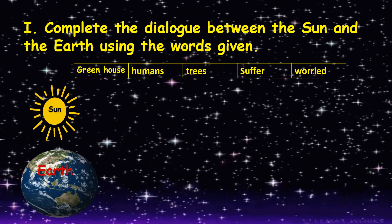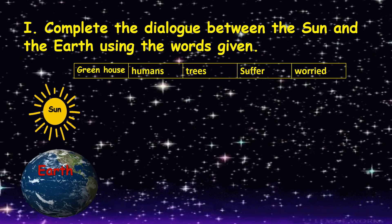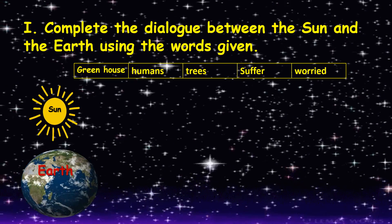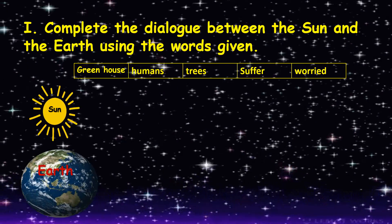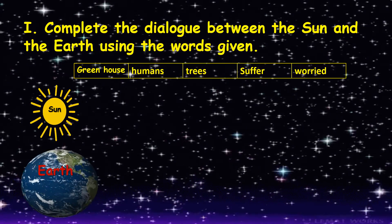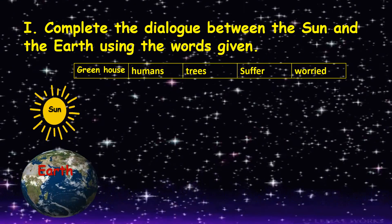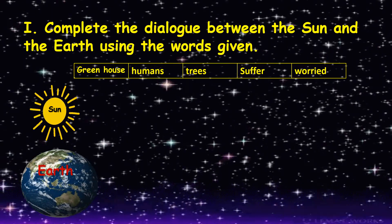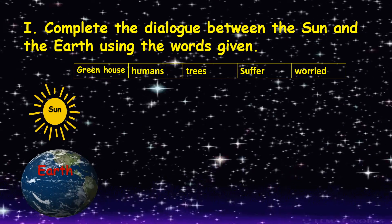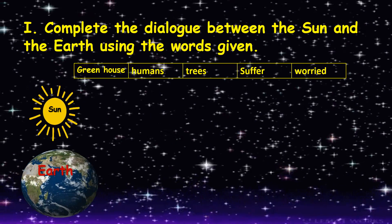Complete the dialogue between the sun and the earth using the words given. The words are: Greenhouse, Humans, Trees, Suffer, Worried.